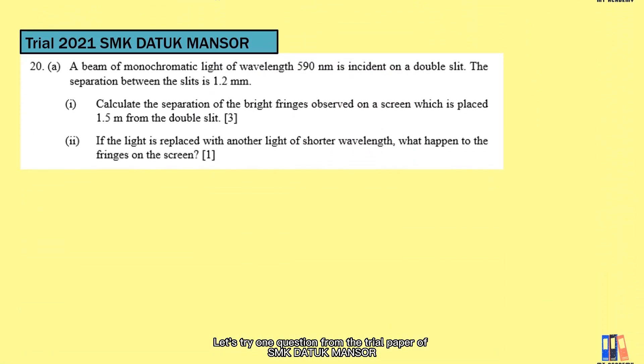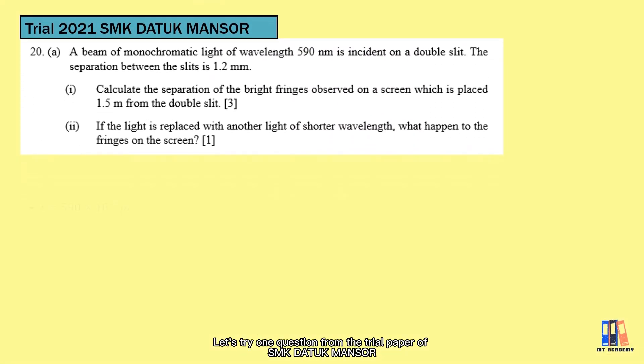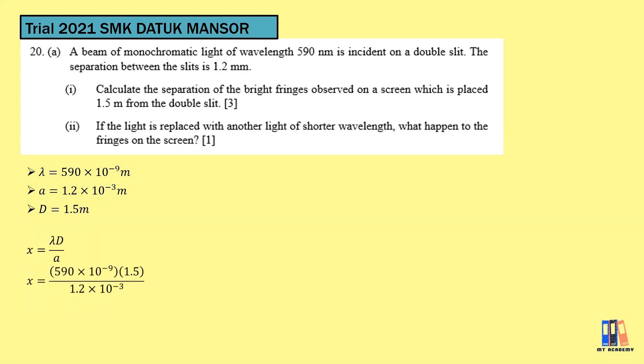Let's try one question from the trial paper of SMK Datuk Mansor. The calculation should not be much problem for you, just be careful with all those terms. We have wavelength of 590 nanometer, separation between slits a is 1.2 millimeter. The screen is placed at 1.5 meter from the double slit. Calculate the separation between the bright fringes. It's quite simple. Just put in the value according to the formula and don't forget to convert them into SI unit. You will get 7.375×10⁻⁴ meter in the end.